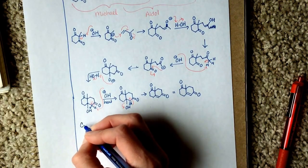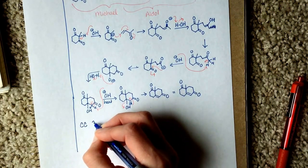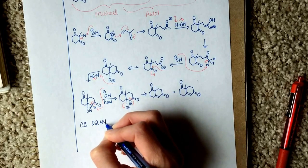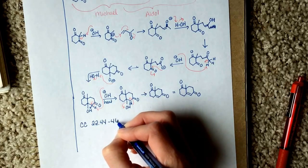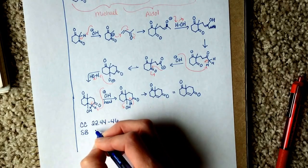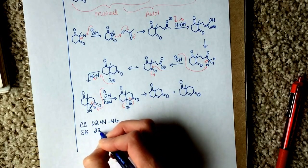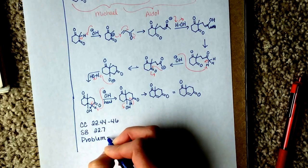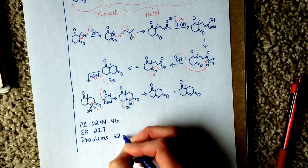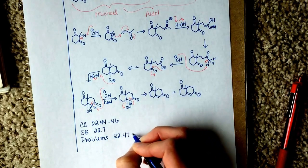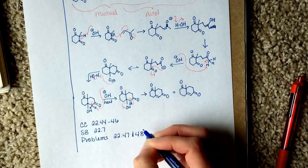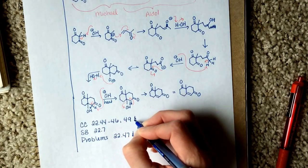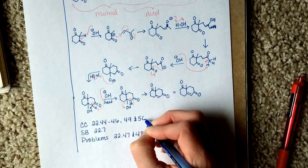For all of these conjugate reactions, you can practice with conceptual checkpoints 22.44 through 22.46, skill builder 22.7, problems 22.47 and 22.48, and also conceptual checkpoints 22.49 and 22.50.